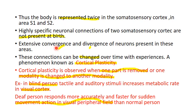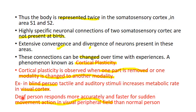Cortical plasticity involves extensive convergence or divergence of neurons, and their number can be changed. This cortical plasticity is observed when one part is removed or when one modality is changed to another. In a blind person, tactile and auditory stimuli increase metabolic rate in the visual cortex area. In a deaf person, the response to sudden movement of any object in the visual peripheral field is quicker and more accurate than in a normal person.